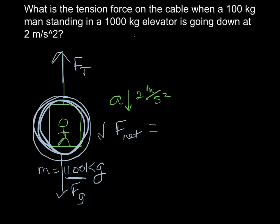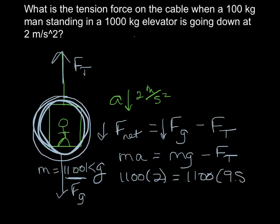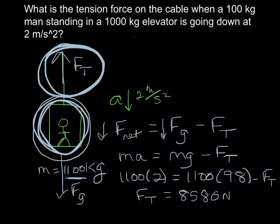Since we're accelerating downwards, our net force is downwards, so we take our gravitational force and subtract our tension force. Mass times acceleration equals mass times gravity minus tension force: 1,100 times 2 equals 1,100 times 9.8 minus tension force. The tension force comes out to 8,580 newtons. The tension force is the force in the wire pulling up the whole elevator and man. If he was going up, we'd expect a bigger tension force, because then tension would have to overcome gravity.